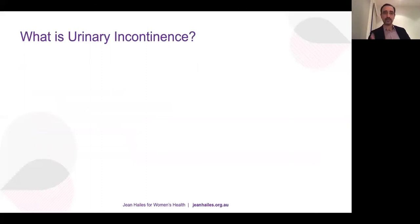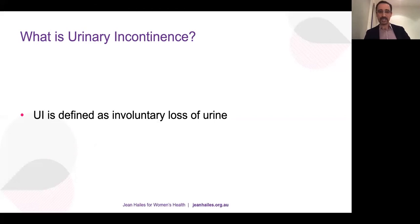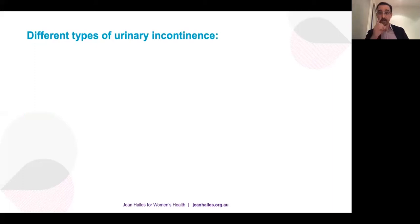So what is urinary incontinence? There is no fancy definition for it. Any involuntary loss of urine is urinary incontinence — as simple as that. There are different types, and the different types make the management also different.